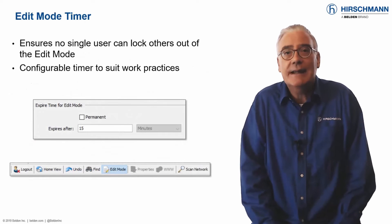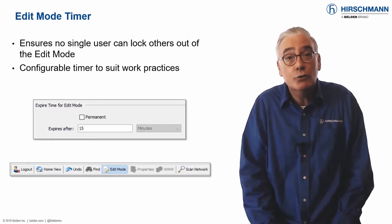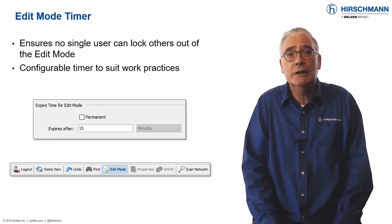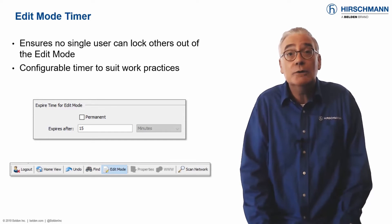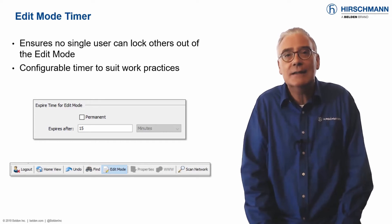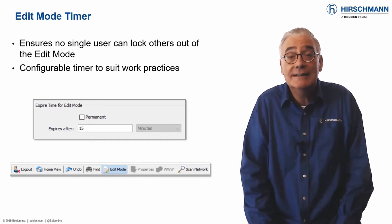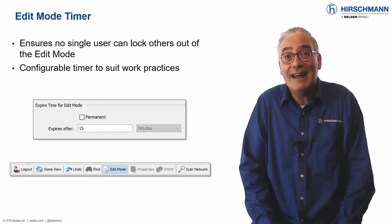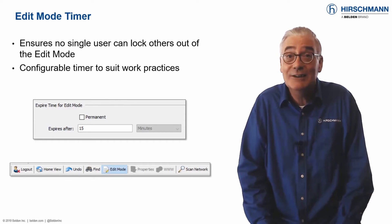It's an easy mistake to make. You put Industrial HiVision into edit mode, which gives you write access. You then get to work designing your topology maps, fine-tuning your status displays, or creating monthly reports. You then get called away to deal with a network problem and accidentally leave Industrial HiVision in edit mode. At best, you've prevented other administrators from editing the application. At worst, you may have given a passer-by write access to Industrial HiVision, and therefore to your network.